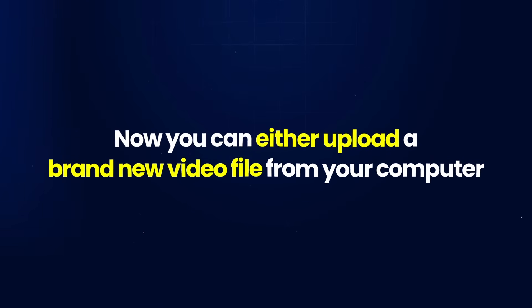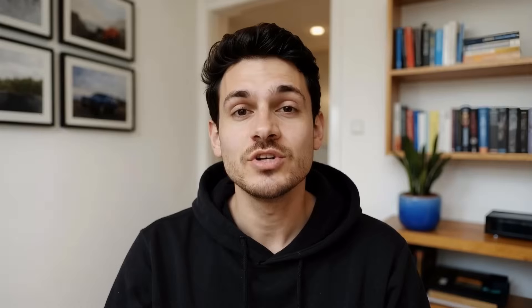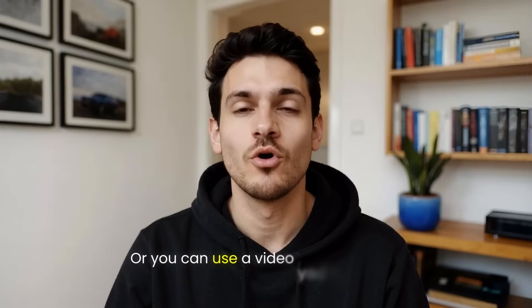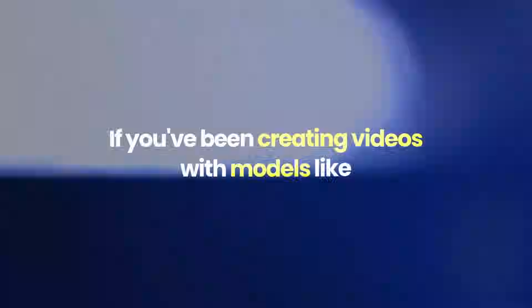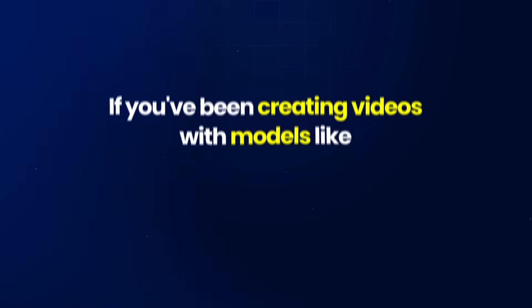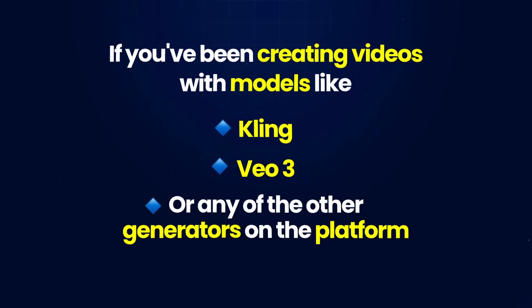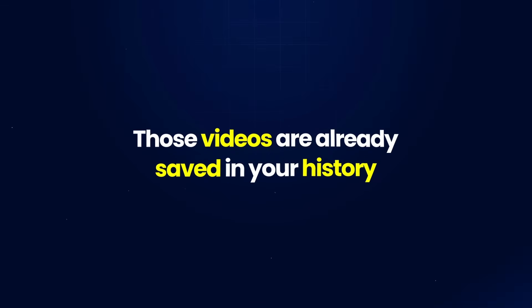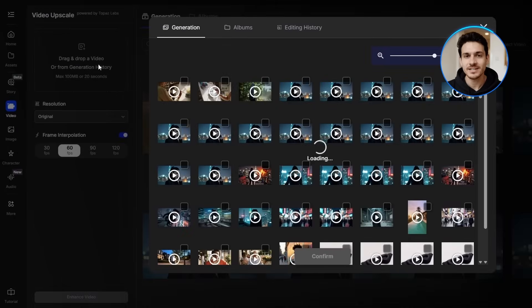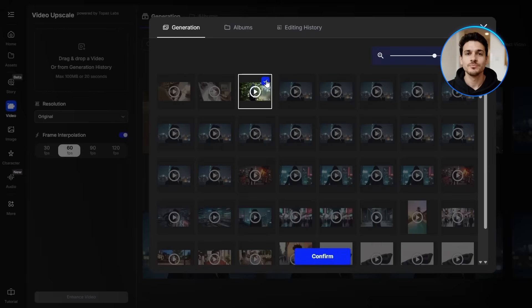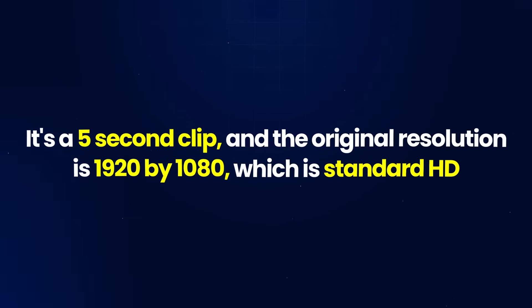Now, you can either upload a brand new video file from your computer, or you can use a video you've already generated inside OpenArt. If you've been creating videos with models like Kling, VO3, or any of the other generators on the platform, those videos are already saved in your history. So just click on history and you'll see everything you've made before. For this example, I'm going to pick a clip I made earlier with Kling.